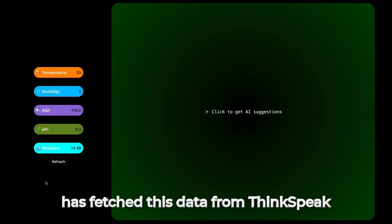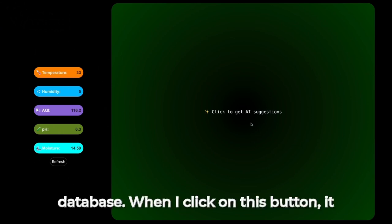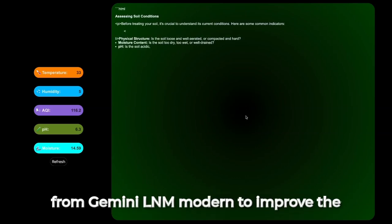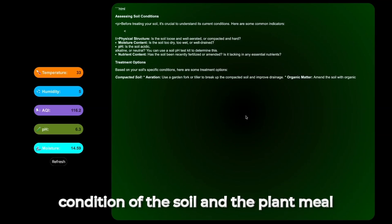The JavaScript has fetched this data from the ThingSpeak database. When I click on this button, it generates some AI solutions from the Gemini LLM model to improve the condition of the soil.